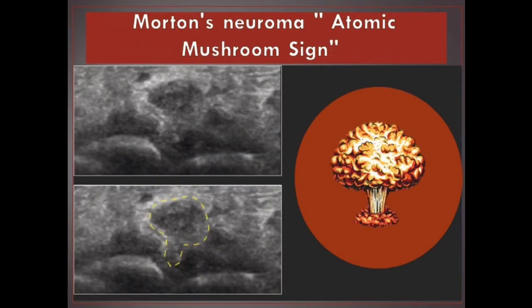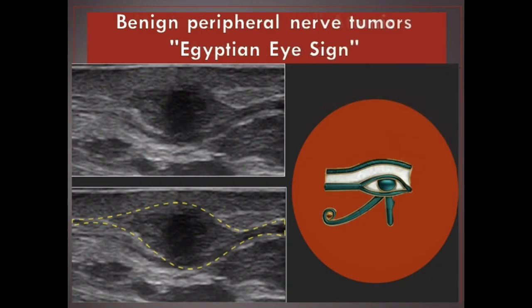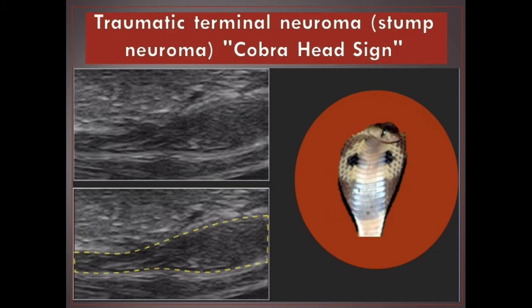Morton's neuroma: atomic mushroom sign. Benign peripheral nerve tumors: Egyptian eye sign. Traumatic terminal neuroma, stump neuroma: cobra head sign.